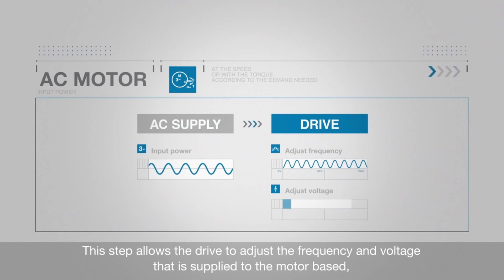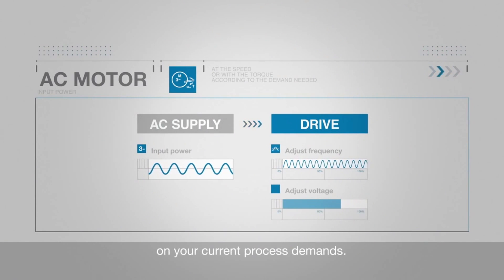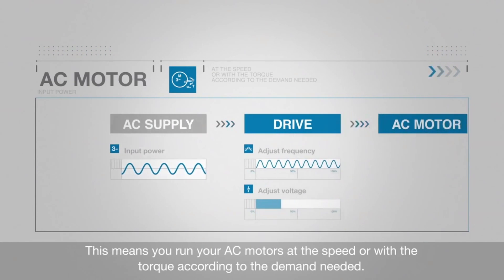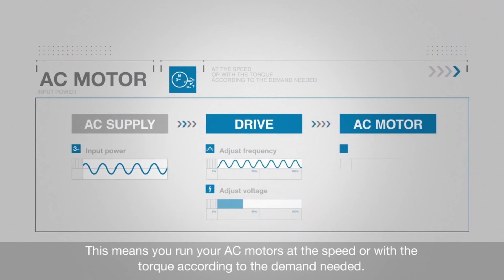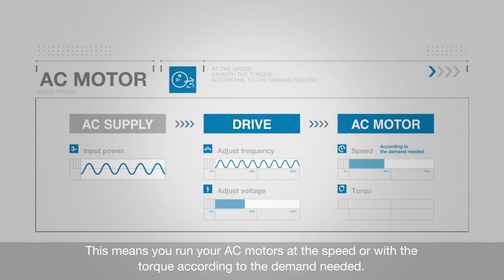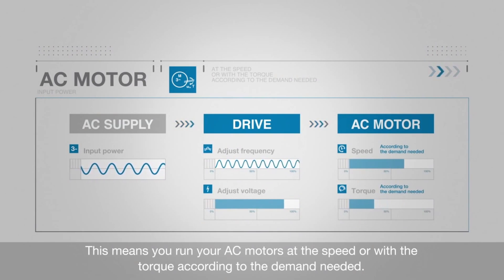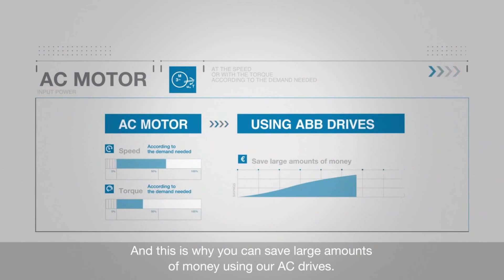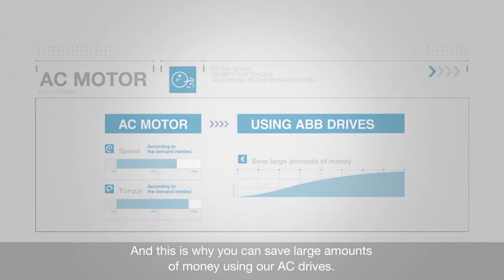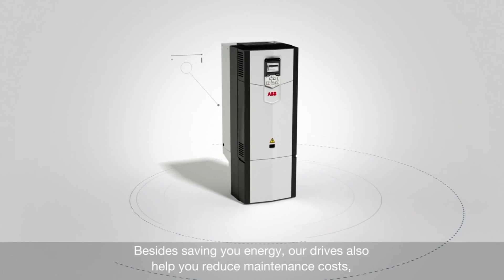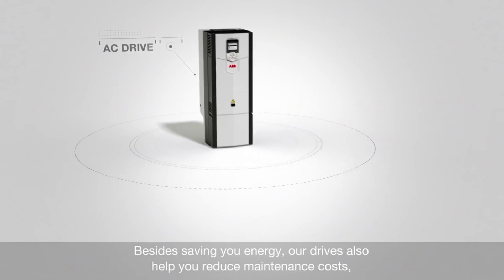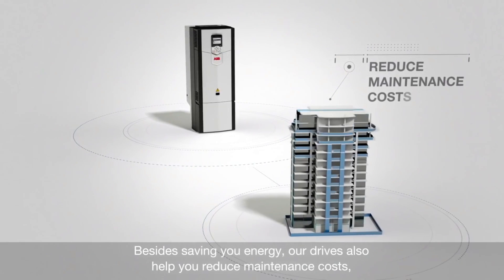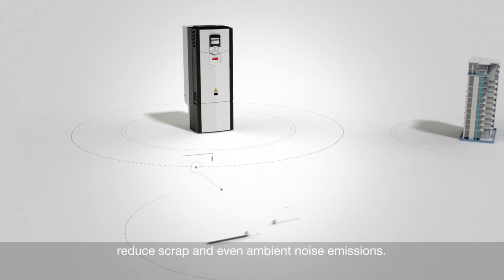This step allows the drive to adjust the frequency and voltage that is supplied to the motor, based on your current process demands. This means you run your AC motors at the speed or with the torque according to the demand needed — and this is why you can save large amounts of money using our AC drives.